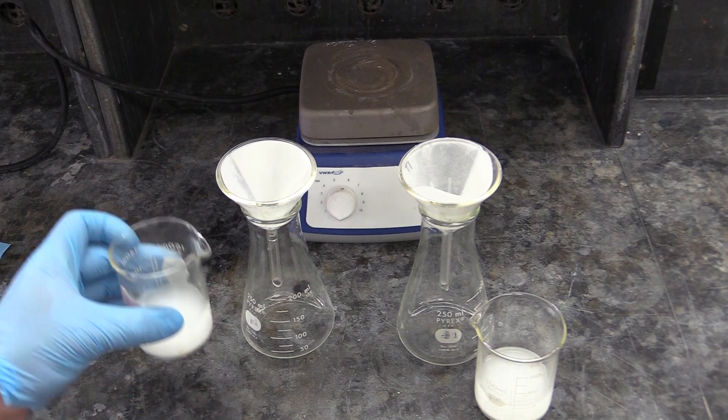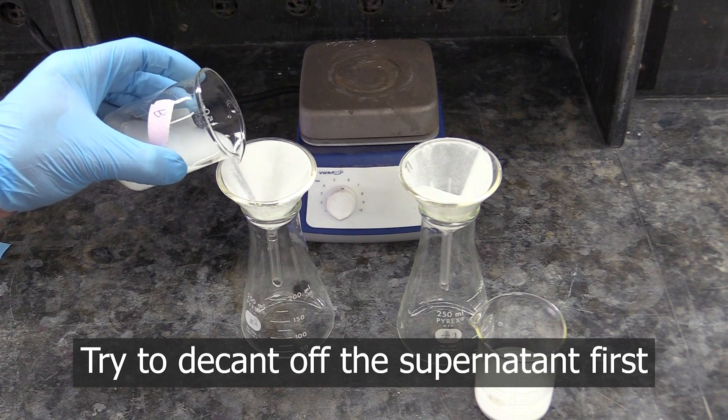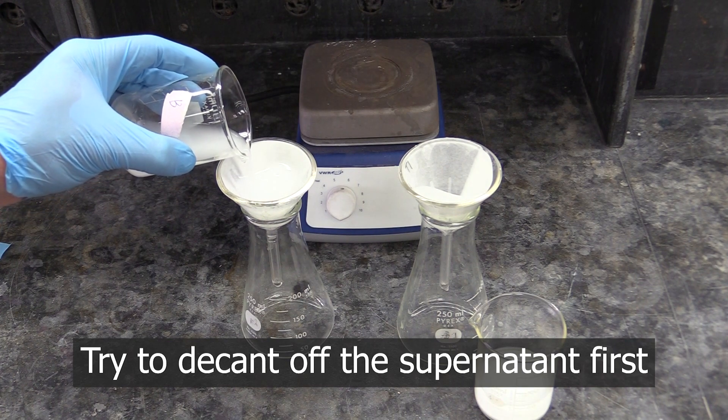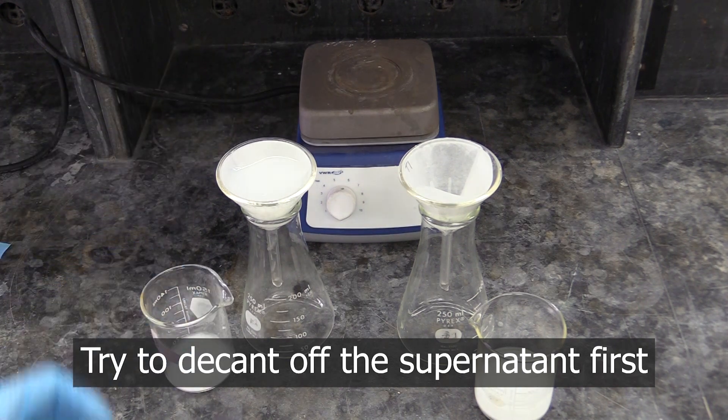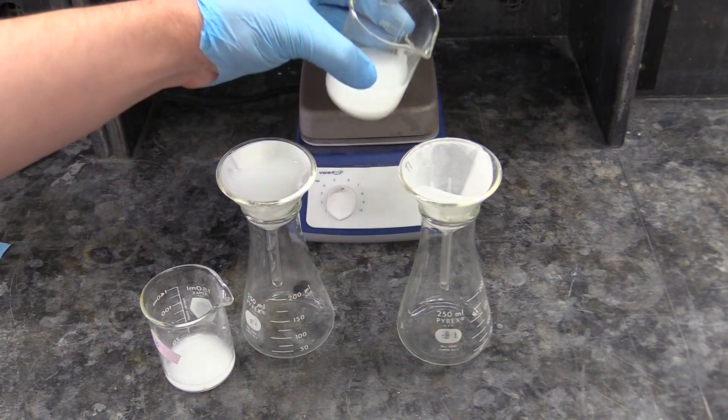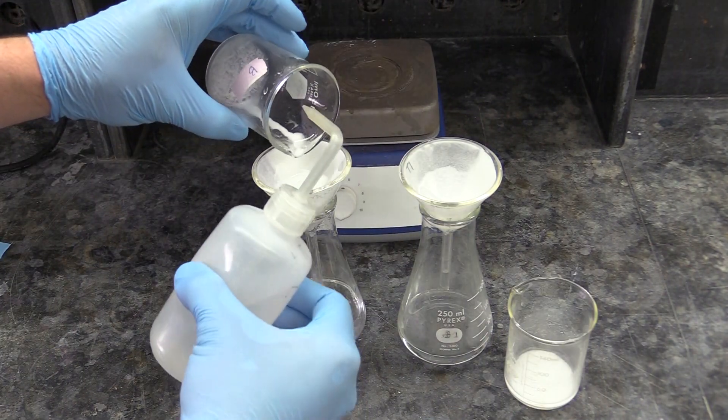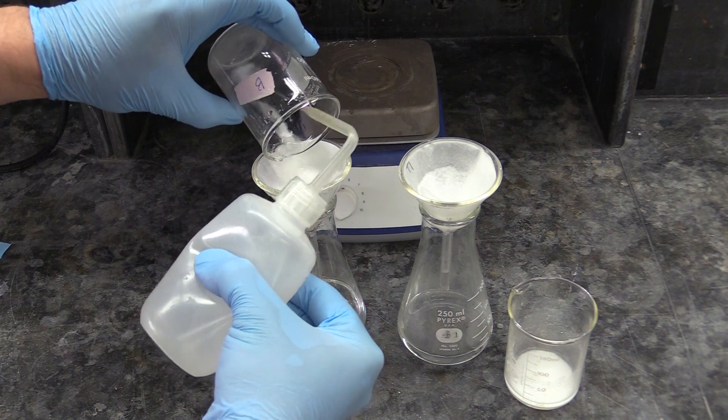And now it's time for the filtering. Believe it or not, this will actually go faster if you try to get just the supernatant, that's the liquid above your precipitate, through first. Then once you have all the supernatant through, use a wash bottle to get the precipitate out of your beaker and into the funnel.